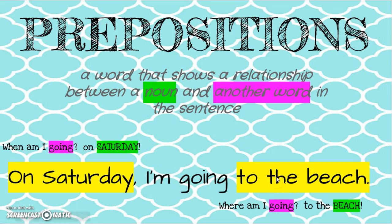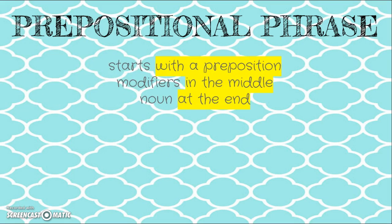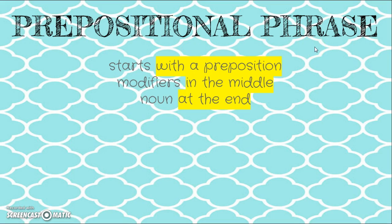When am I going? So prepositions are at the beginnings of these phrases. They're followed by a noun, and they show a relationship. We don't really see prepositions by themselves — we really see them with prepositional phrases. So we look at what a prepositional phrase looks like. If I think about the term phrase, a phrase automatically means it's a group of words. It starts with a preposition, has modifiers in the middle, and a noun has to be at the end.